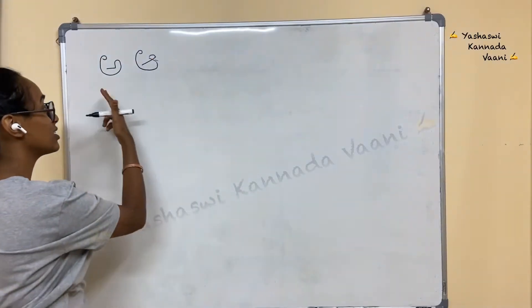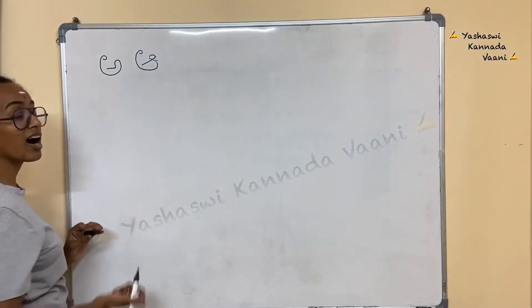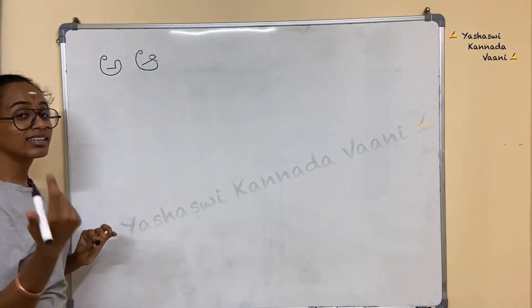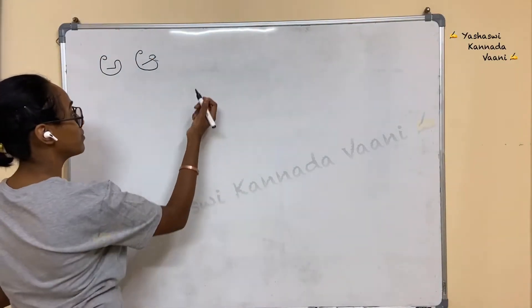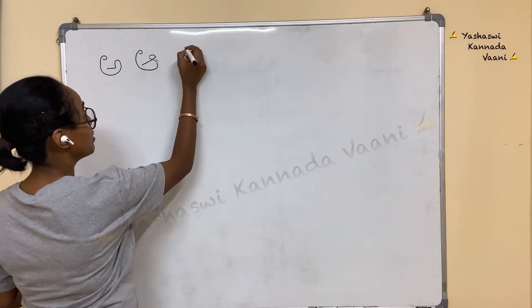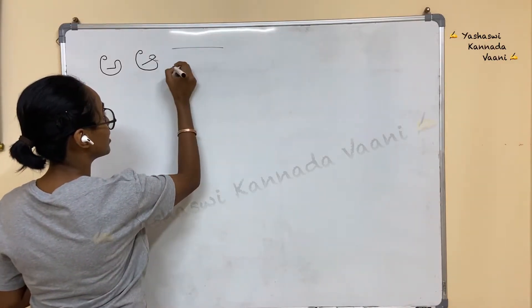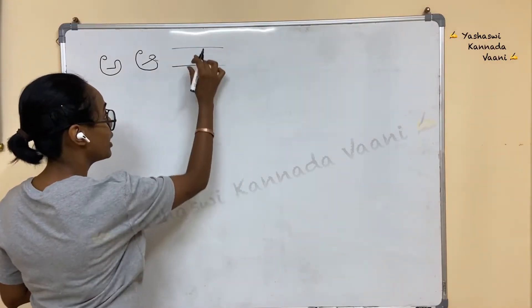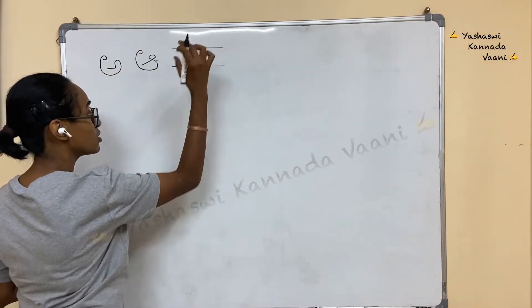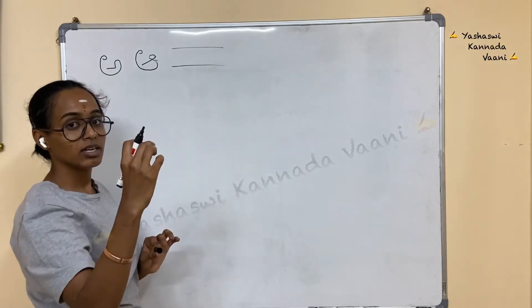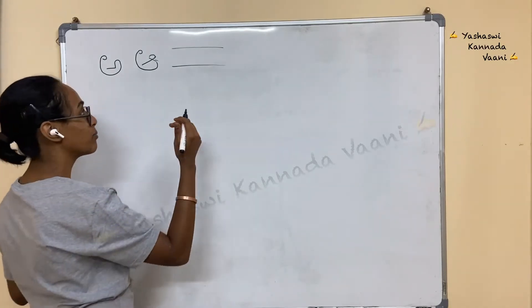So we learnt the two letters — A, A (ಆ). For the third letter, please remember when you're writing, write within the two lines. Okay? It's very important.